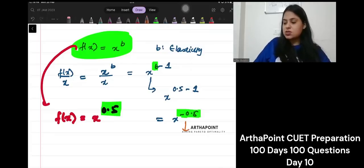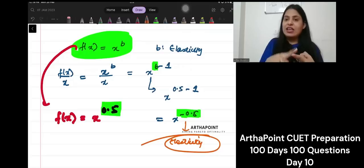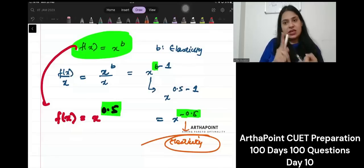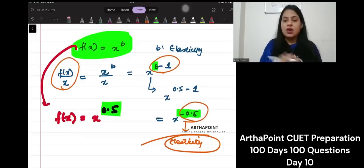Very simple. Very, very simple. You take any fixed elasticity function. Fixed elasticity function is given by x to the power b. b is the elasticity. Jiske bhe elasticity nikalni hai, uski power check karlo. Whatever is the power, that's the elasticity. Okay. All right. Thank you. Let's meet in the next.